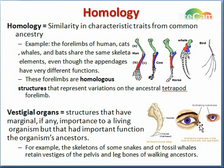In homology, comparative embryology reveals anatomical homologies that are not visible in the adult organism. An example of that is that all vertebrate embryos have a post-anal tail and a pharyngeal arch.